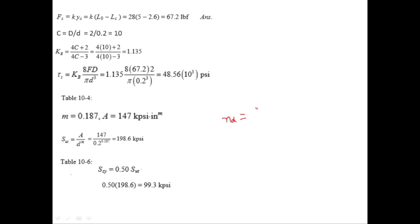Factor of safety equals SSY divided by tau s, which equals 99.3 divided by 48.56. Kpsi cancels out, so factor of safety equals 2.04. We have found all the required values: FS equals 67.2 pound force, LS equals 2.6 inches, and factor of safety equals 2.04. Thank you so much for watching the lecture.